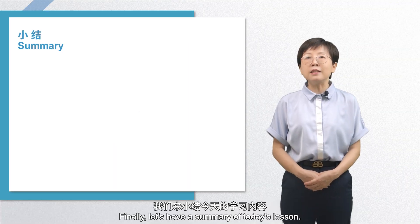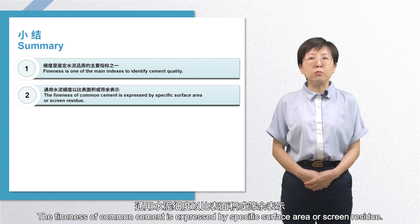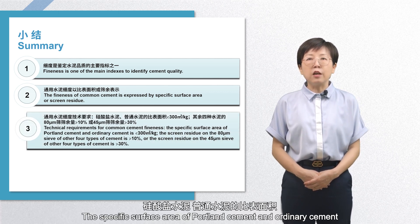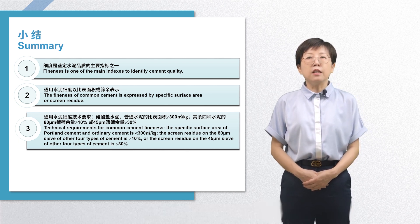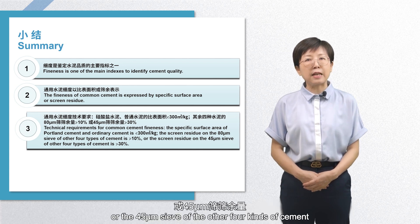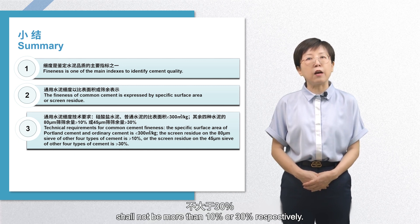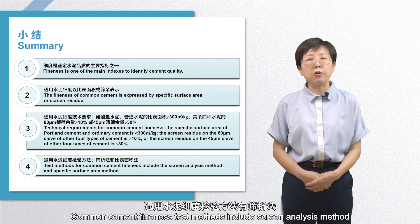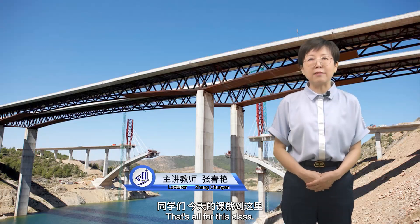Finally, let's have a summary of today's lesson. Fineness is one of the main indexes to identify cement quality. The fineness of common cement is expressed by specific surface area or screen residue. The specific surface area of Portland cement and ordinary cement shall not be less than 300 square meters per kilogram. The weight of residue on the 80 micrometer sieve or the 45 micrometer sieve of the other four kinds of cement shall not be more than 10% or 30% respectively. Common cement fineness test methods include screen analysis method and specific surface area method. That's all for this class. Thank you.